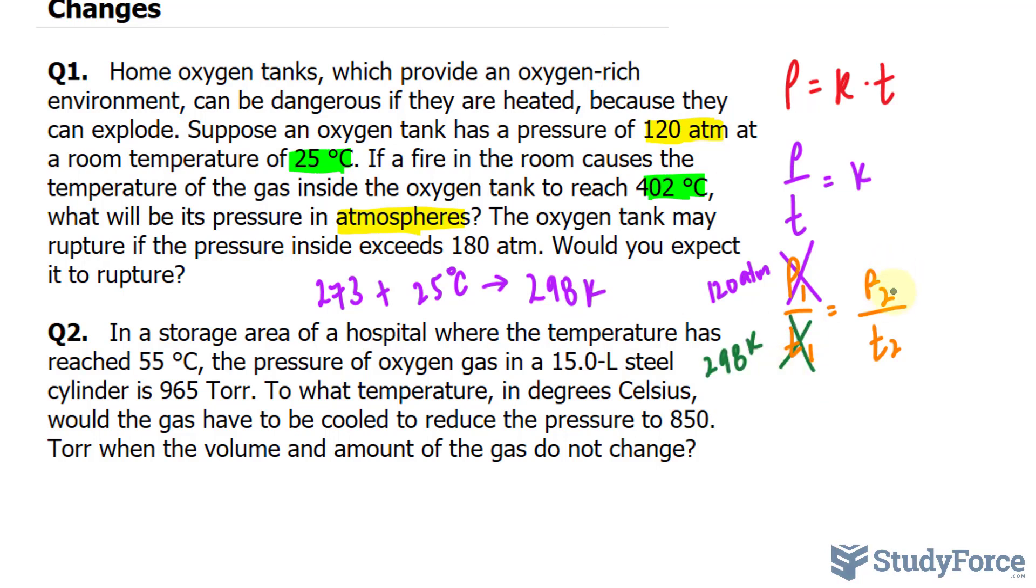What we're looking for is p sub 2, so I'll just leave it that way. And the second temperature is 402°C, which needs to be converted into Kelvin. So I'll take 402 plus 273 is 675. So I'll change that with 675 Kelvin.